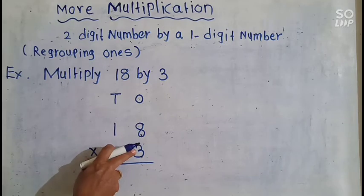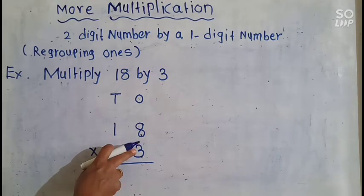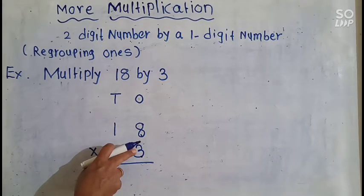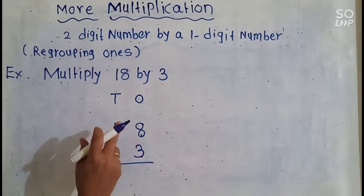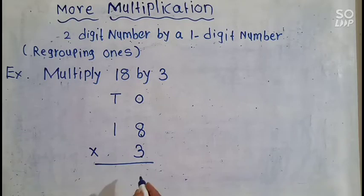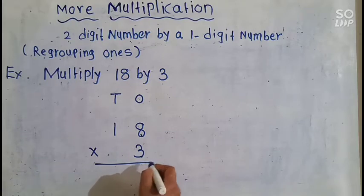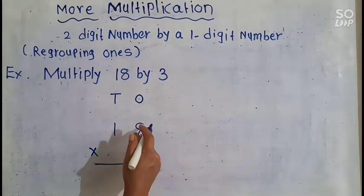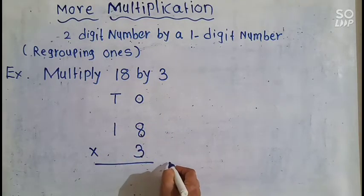3 1s are 3, 3 2s are 6, 3 3s are 9, 3 4s are 12, 3 5s are 15, 3 6s are 18, 3 7s are 21, 3 8s are 24. Look here — 3 8s are 24.